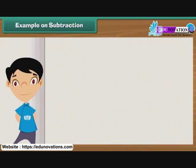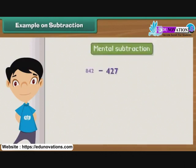Let us practice mental subtraction. Subtract 427 from 842. To simplify subtraction, let us convert 427 to 430 and 842 to 840.